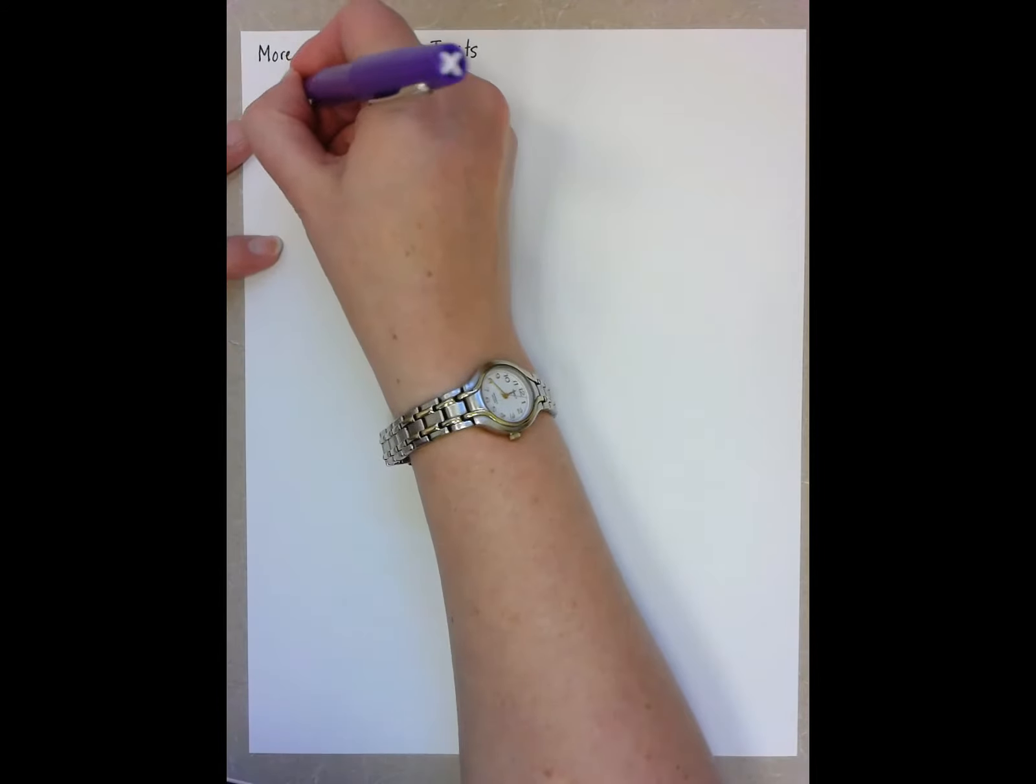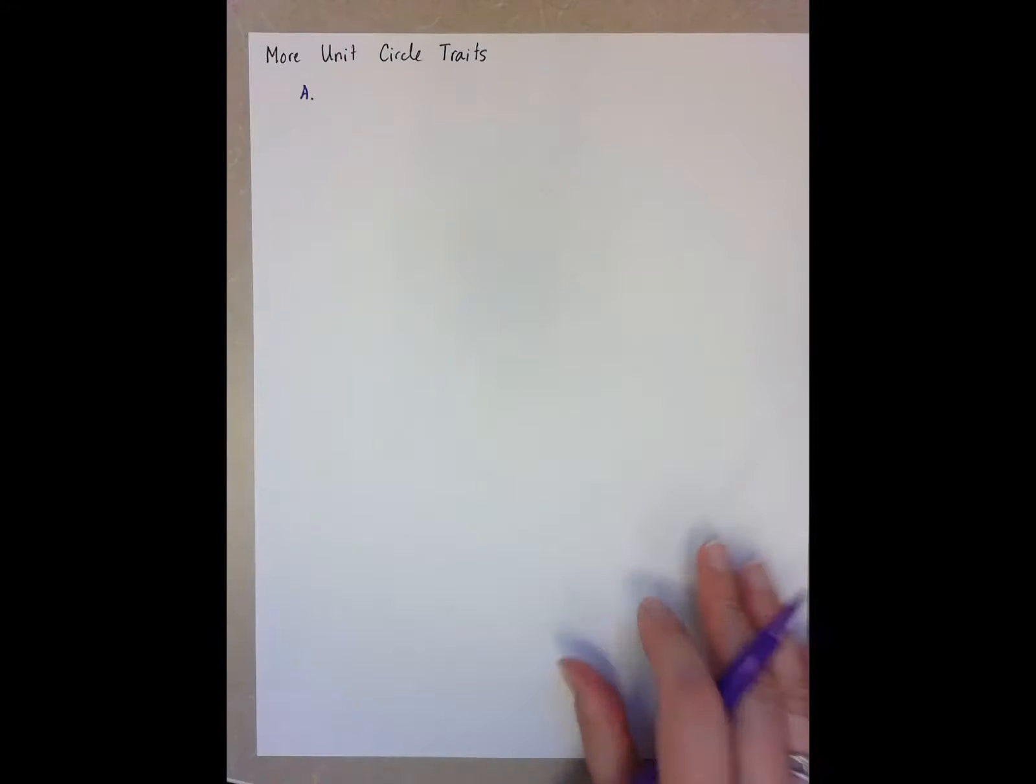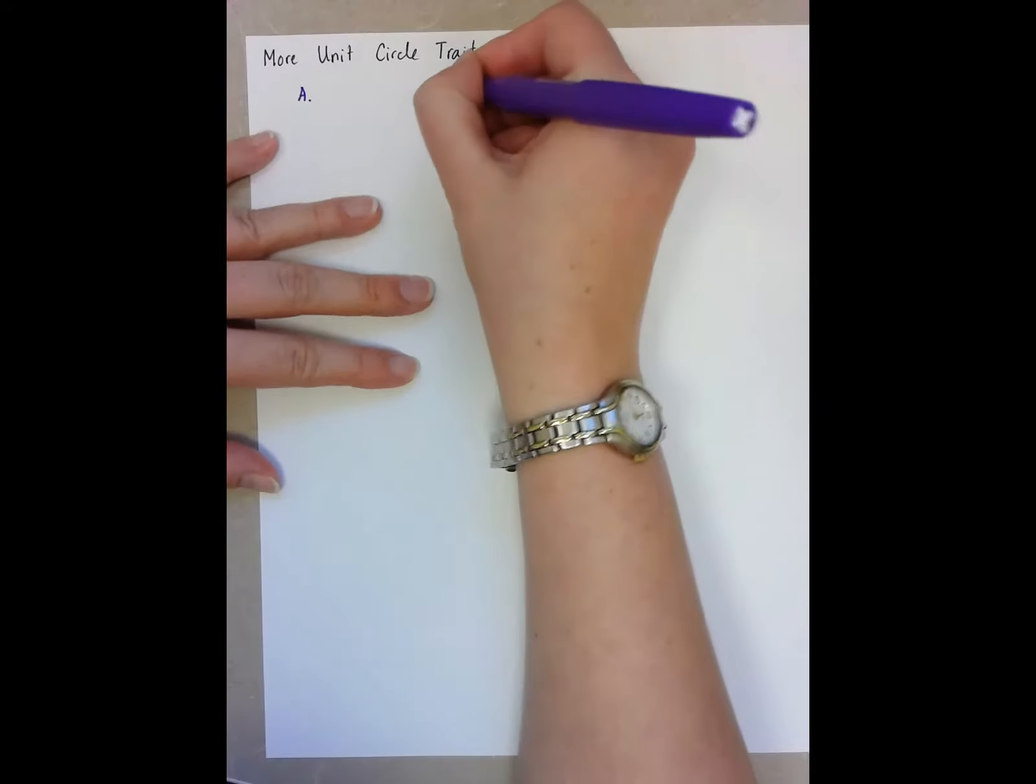These notes are on more traits about the unit circle. There are a couple of things that we want to point out here. The first is that when I was working with my unit circles, I was working with triangles. So let's draw in a triangle here.